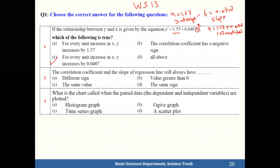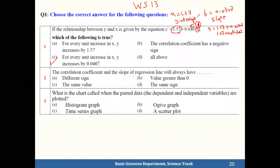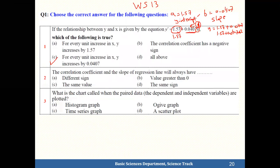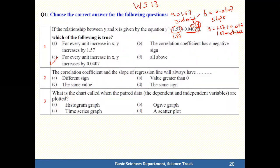The answer is c. Every time x increases by 1, y increases by 0.0407. Because when we multiply x by this coefficient, the constant 1.57 stays fixed. So each time x increases by 1, y increases by that coefficient value.